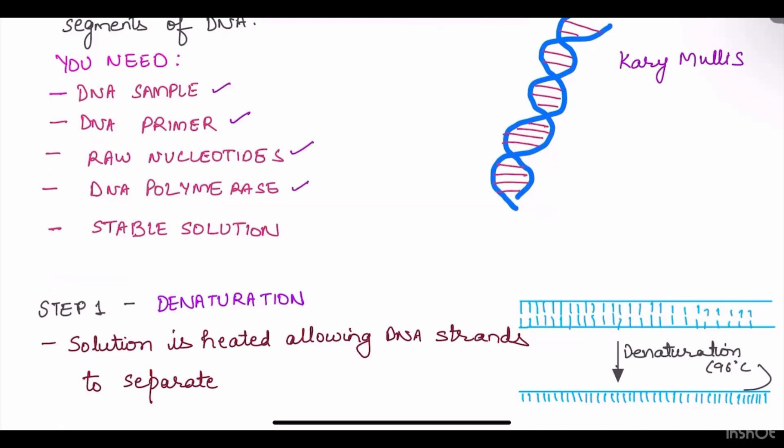DNA polymerase, that is the enzyme also called Taq polymerase. It is thermostable and does not denature at very high temperature. And a stable solution, where magnesium and potassium provide optimum conditions for DNA denaturation and renaturation.